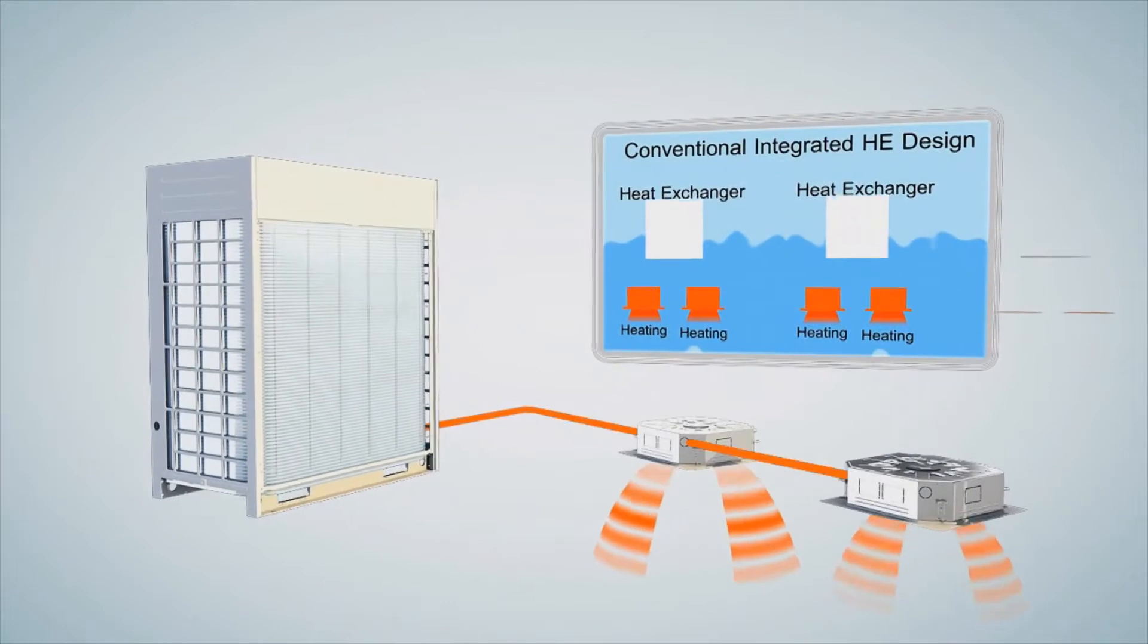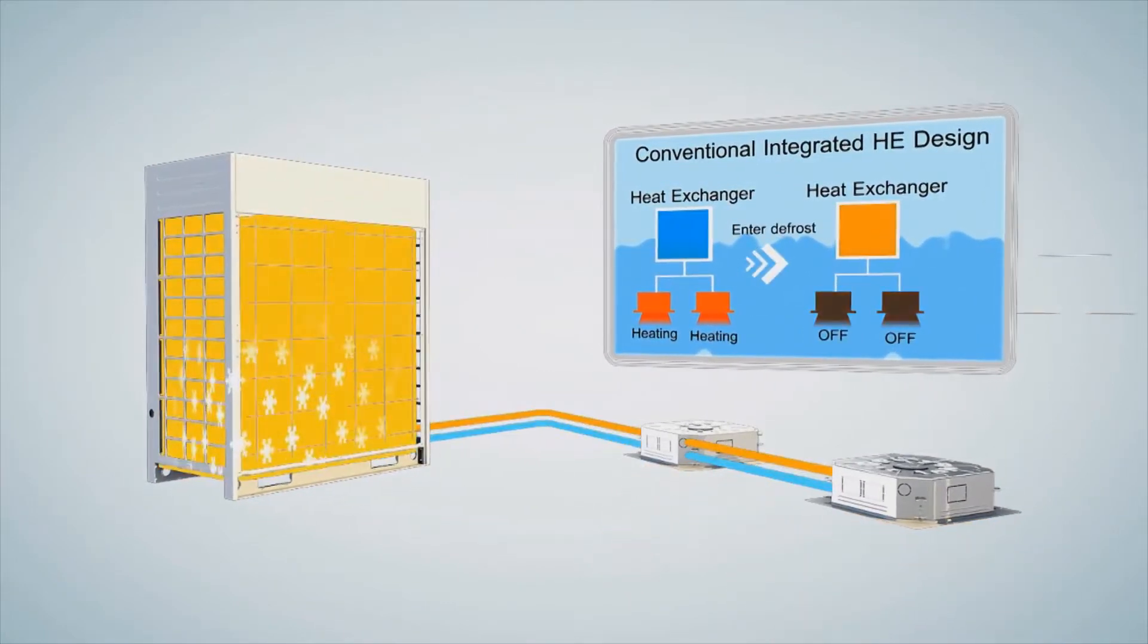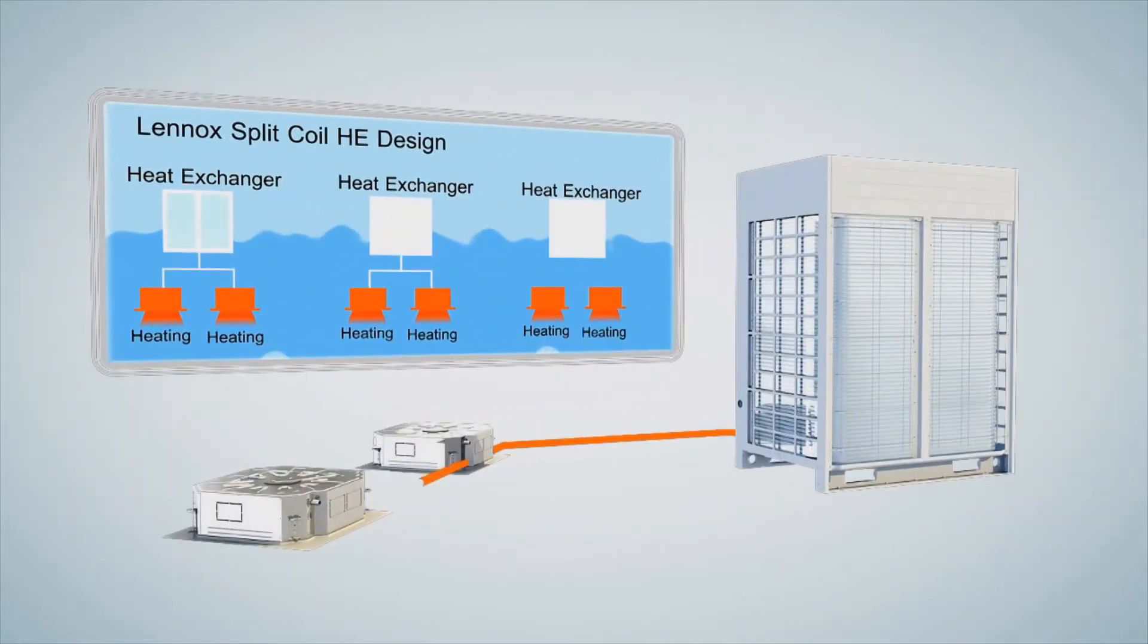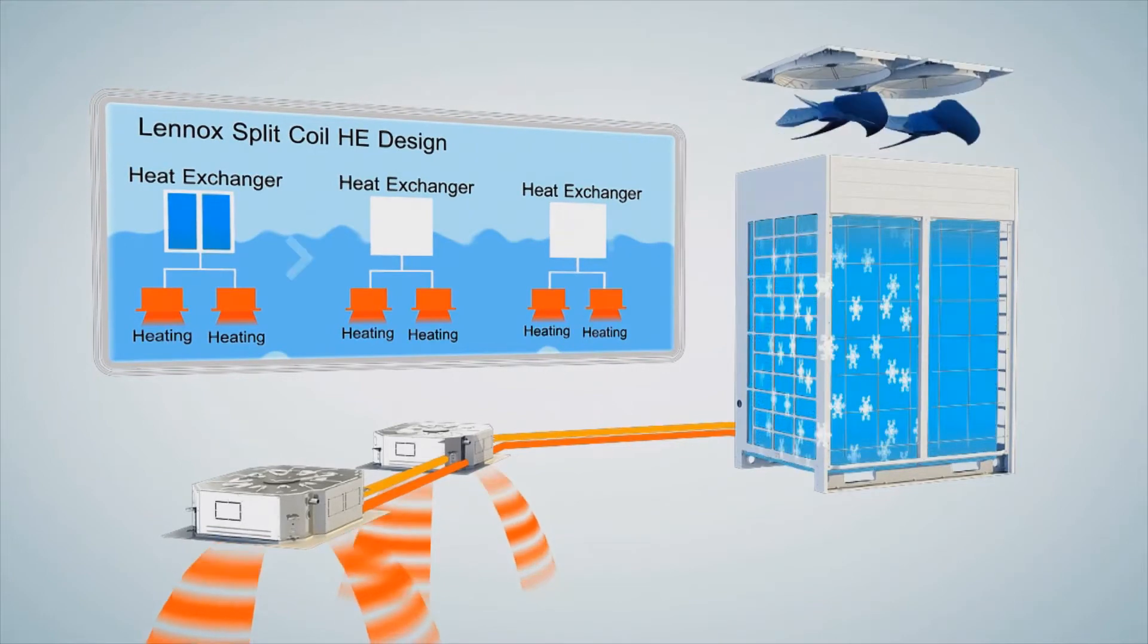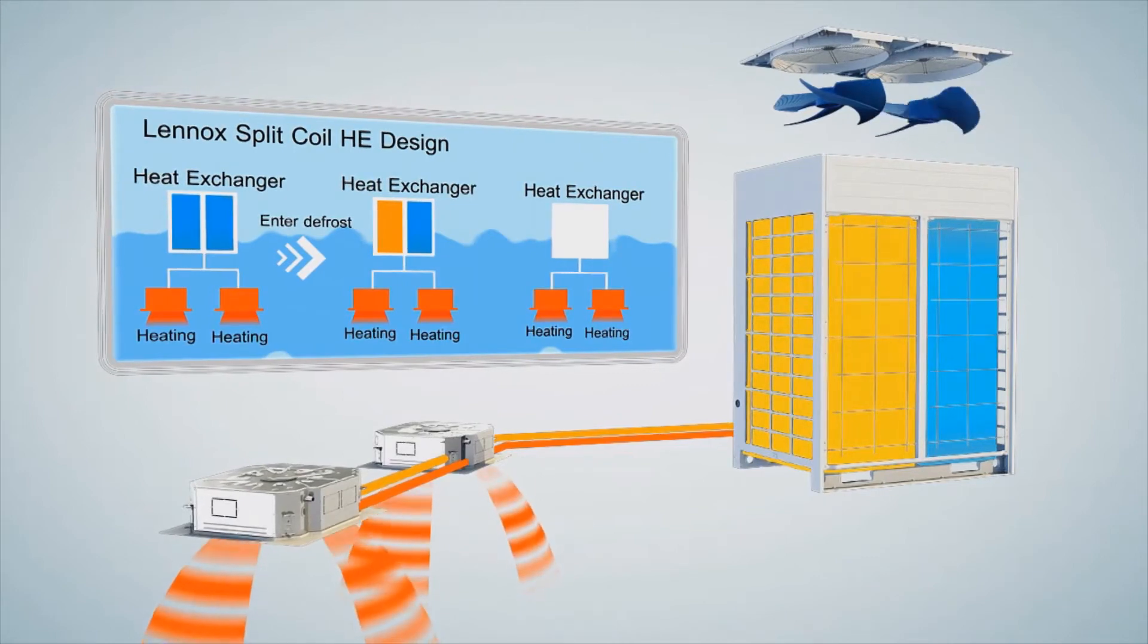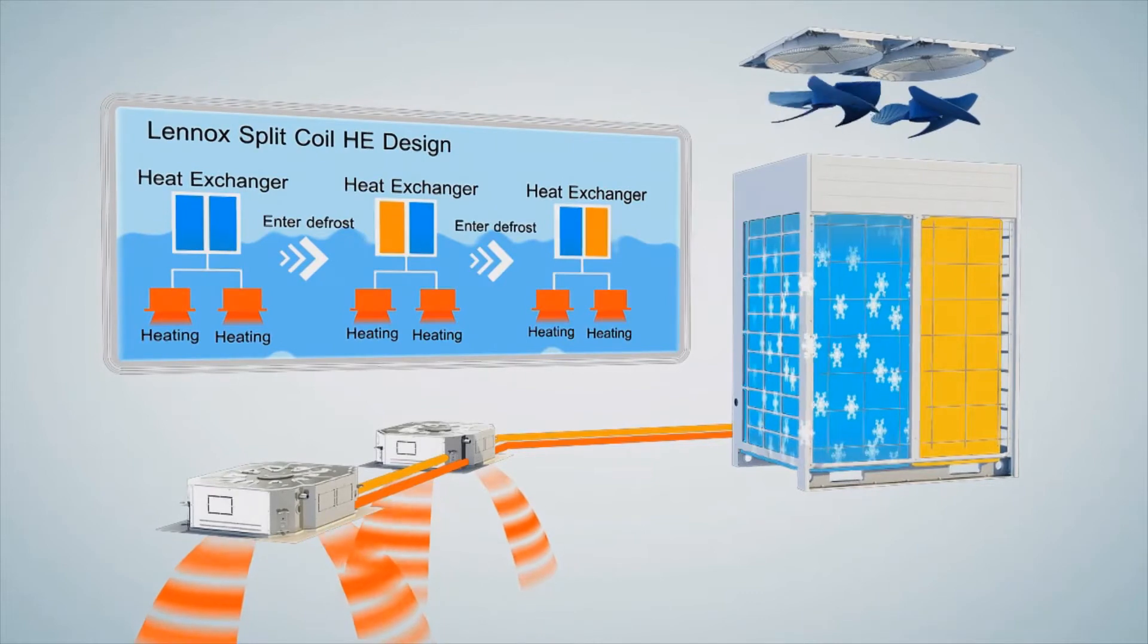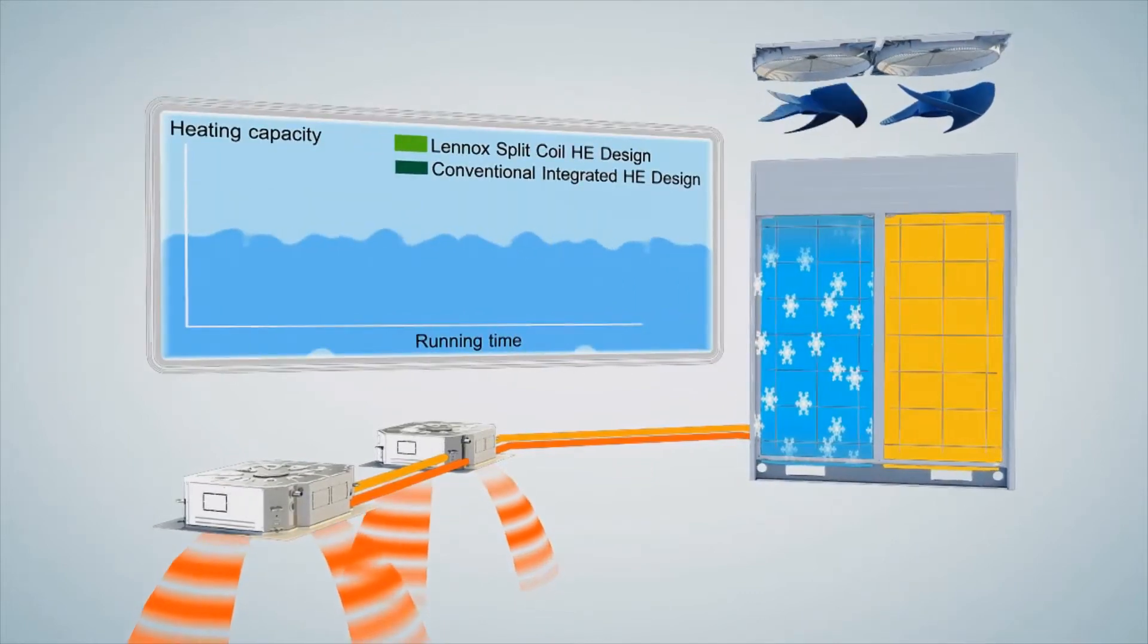A conventional integrated heat exchanger working in defrost mode must stop indoor unit operation. The Lennox VRF system utilizes a uniquely designed split coil heat exchanger and independently controlled fan motors to allow the system to continuously deliver heating throughout the defrost cycle. One portion of the coil is defrosted separately while the other portion remains in heating mode.